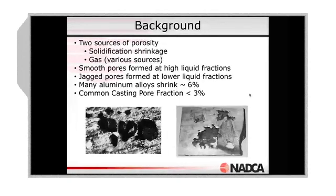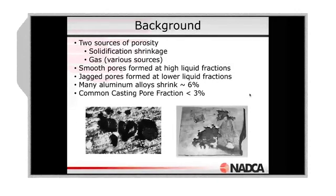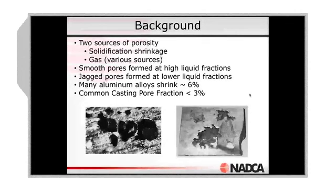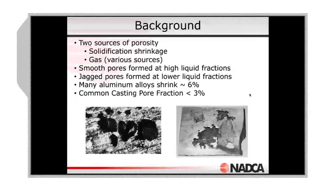Going back to the volumetric contraction we talked about yesterday: with aluminum alloys, somewhere between 4% to 6% volumetric contraction; with zinc, maybe 3% to 4% depending upon the alloy; and then magnesium alloys are somewhere in the middle, around 4.5% volumetric contraction.